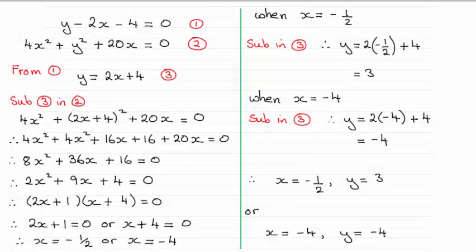Hi there. So for this question we had to solve these two simultaneous equations and you can see the answers were x equals minus a half, y equals 3, or you can have the other solution as well: x equals minus 4, y equals minus 4.